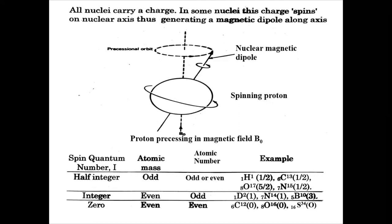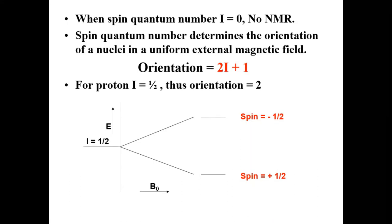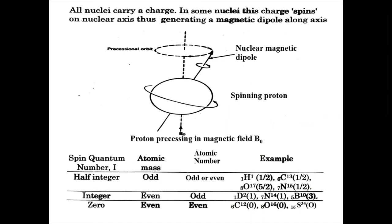A question may arise: which atom will be NMR active and which will be NMR inactive? You only need to keep in mind one rule: nuclei having an odd molecular mass will always be NMR active. Forget all other complicated terms from textbooks — just remember that odd mass nuclei are always NMR active.